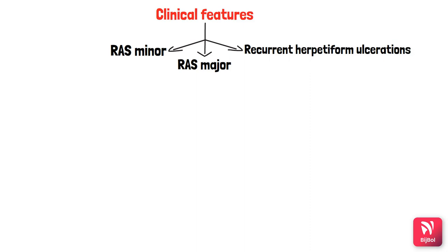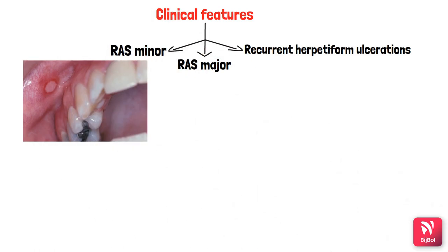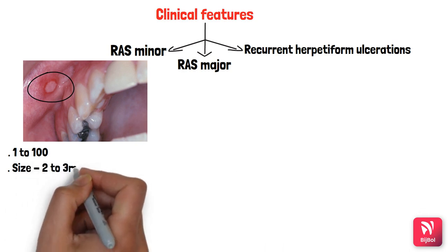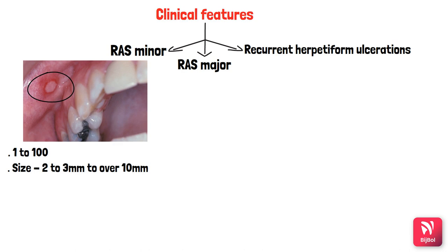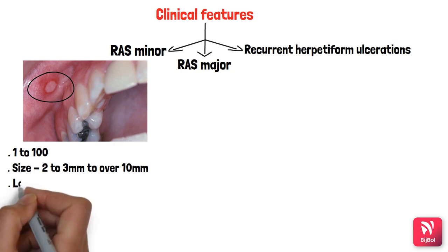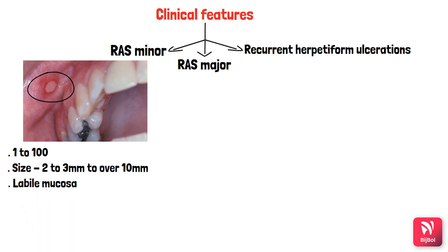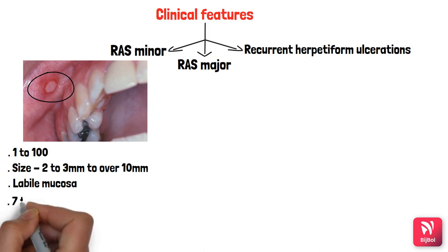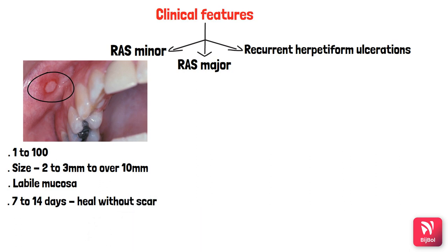Recurrent aphthous minor is the one actually called canker sores. There will be single or multiple erosions on the oral mucosa covered by a gray membrane, surrounded by an erythematous halo — this is the classic picture. In a single outbreak, lesions may vary from 1 to 100, each ranging from 2–3 mm to over 10 mm in diameter. They occur on labile (movable) mucosa — labial mucosa, tongue, soft palate — and heal spontaneously within 7 to 14 days without scar formation.